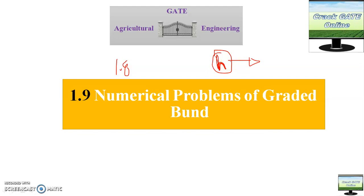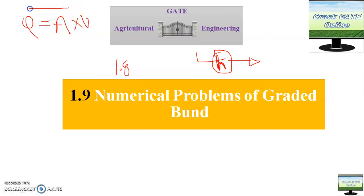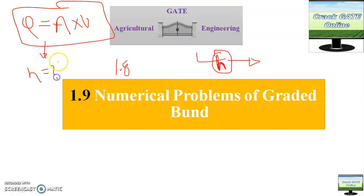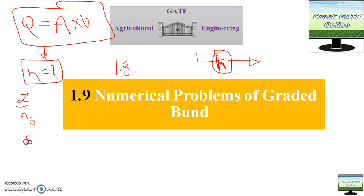In this video I will take one or two numerical problems so that the method will be more clear. In the last video I told you that you have to calculate discharge Q equal to area into velocity, and from here you need to calculate the value of h. I discussed the entire method in terms of side slope, seepage line slope, land slope, and longitudinal slope.